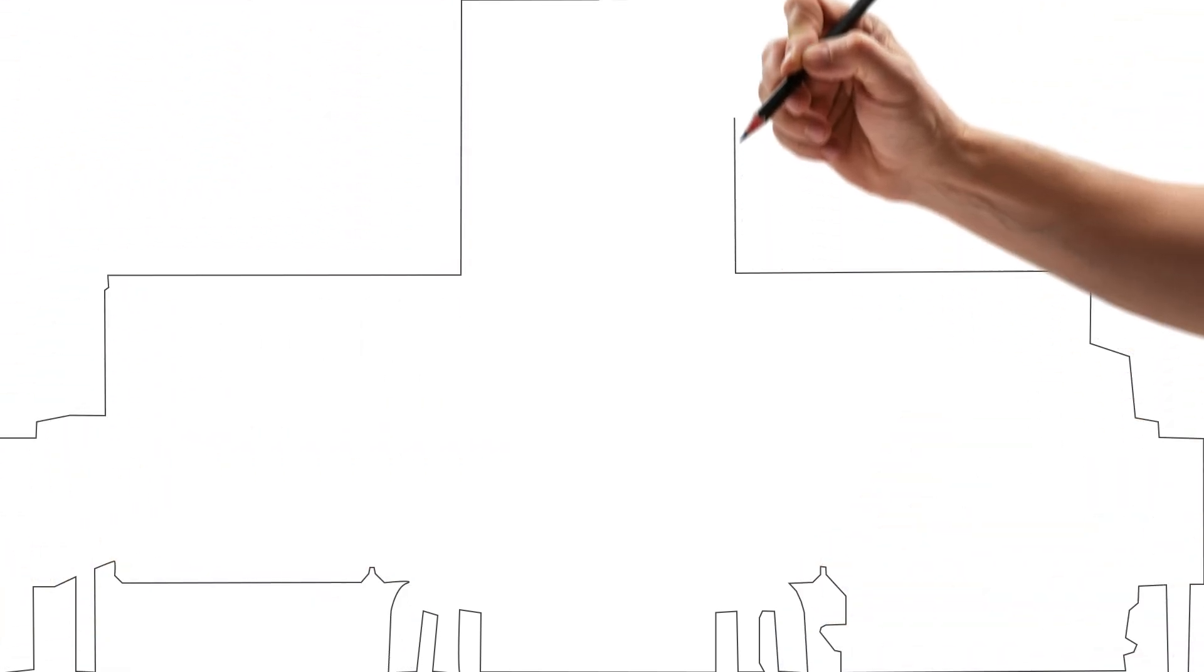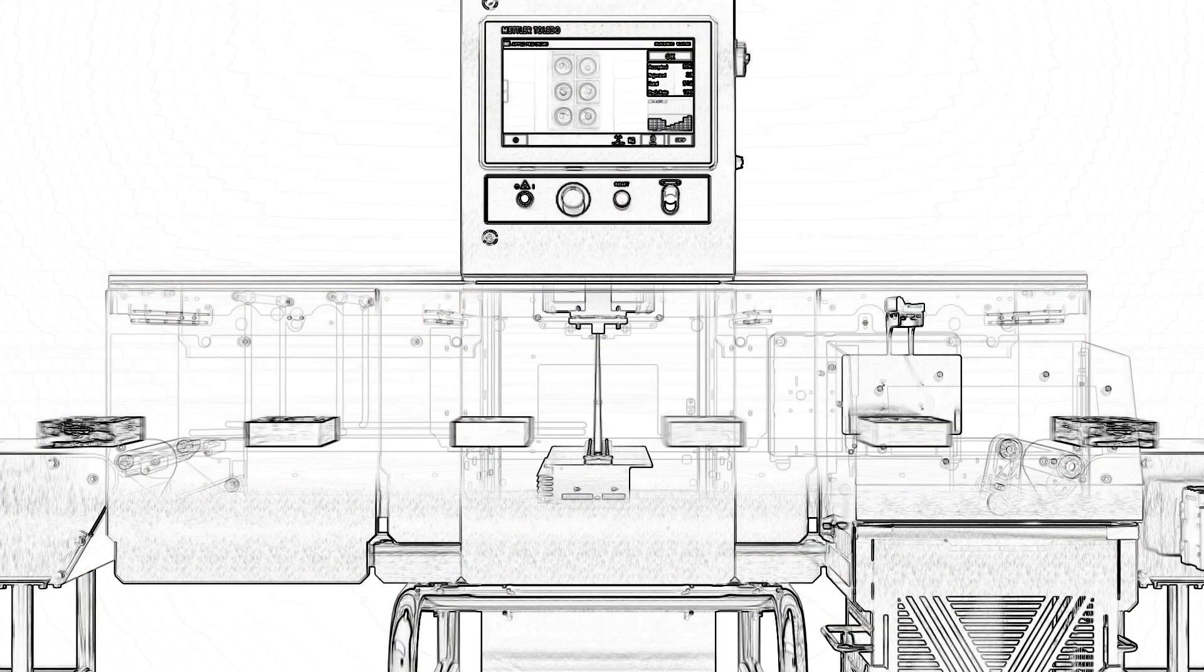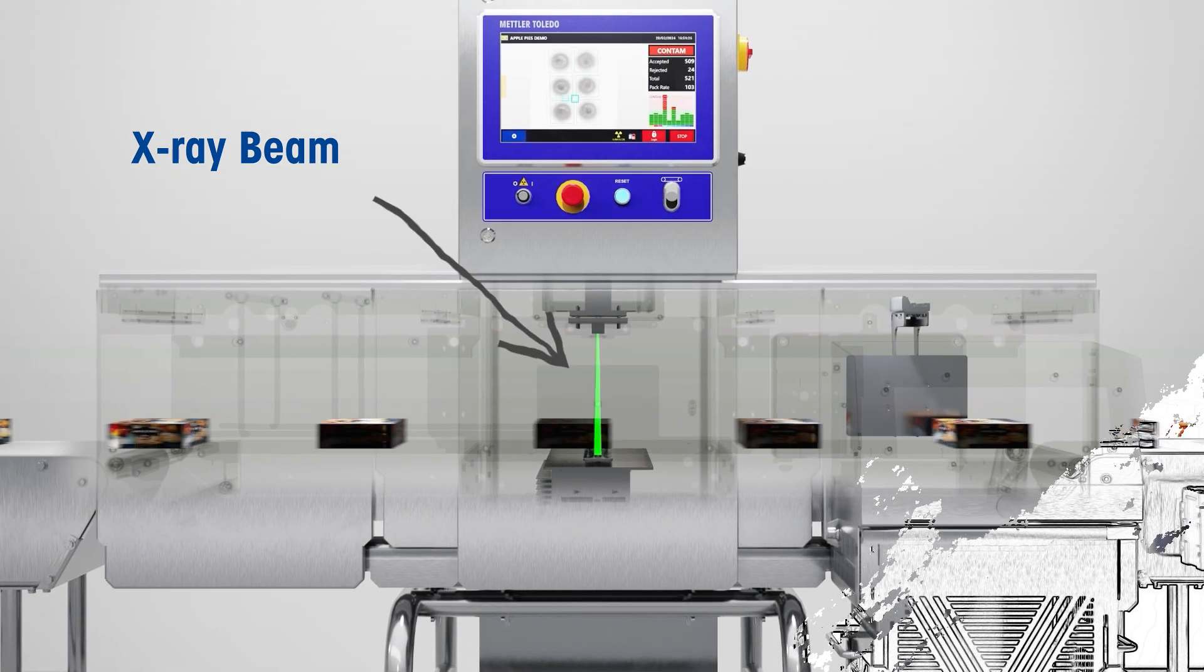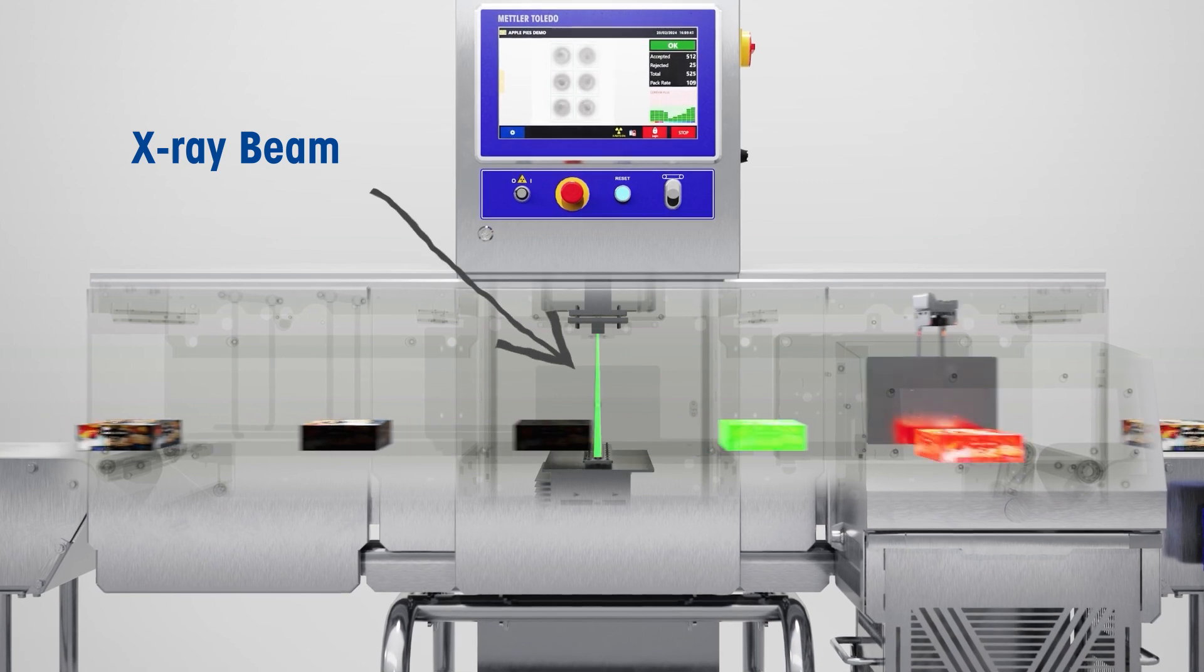How does it work? An X-ray beam passes through the product, creating an X-ray image of what's inside. Contaminated or defective products are automatically detected and rejected from the production line.